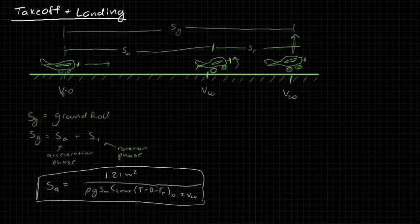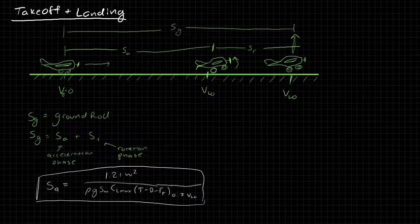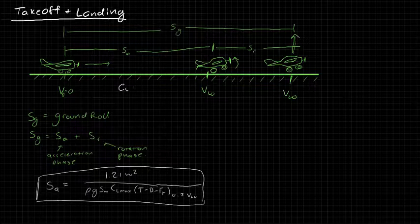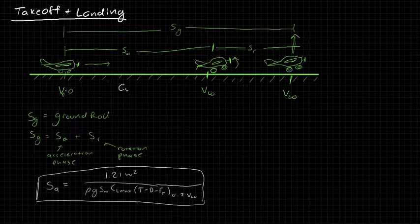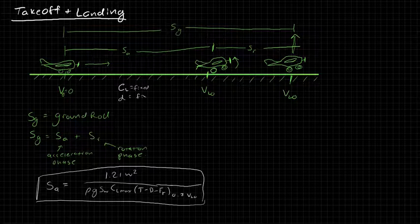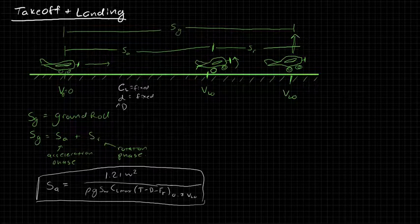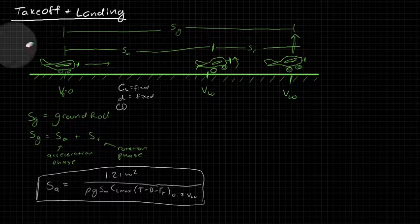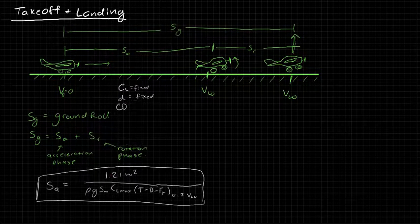Now this is all dictated, for the most part, by the aircraft design. And the reason for that is because during the acceleration phase, the aircraft attitude is fixed by the landing gear. So CL is fixed, alpha is fixed, and so drag, the drag coefficient CD is also fixed.